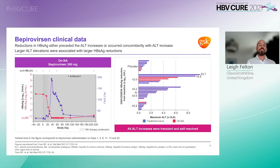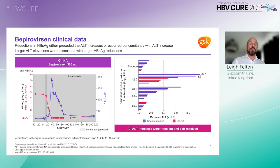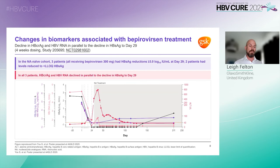As shown on the right, larger ALT elevations were associated with greater S antigen reductions irrespective of antigen status, with the greatest ALT elevations observed for participants that achieved S antigen declines of at least 2 log10. Overall, GSK concluded that these data support the hypothesis that suppression of S antigen to below LLOQ can lead to targeted destruction of HBV-infected hepatocytes by the immune system, resulting in raised transaminases within the blood.